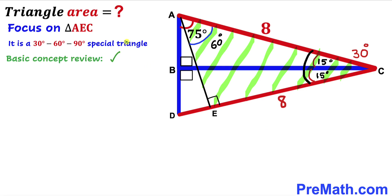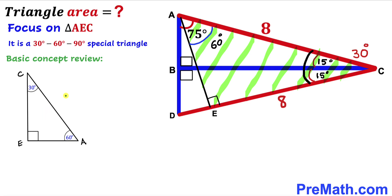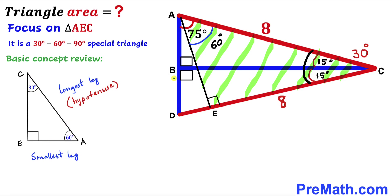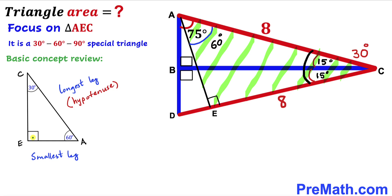Before we proceed, let me review the basics of the special 30-60-90 triangle. In this right triangle AEC, this angle is 30 degrees, this angle is 60 degrees, and this angle is 90 degrees. The 30 degrees is our smallest angle and 90 degrees is our largest angle, so the side opposite the smallest angle is our smallest leg, and the side opposite the largest angle is our longest leg — also called the hypotenuse.